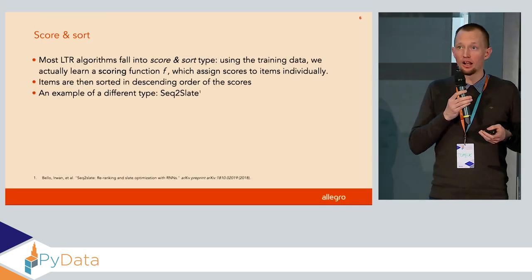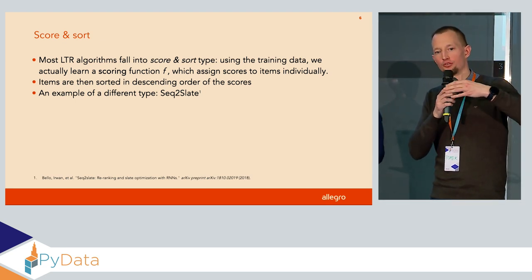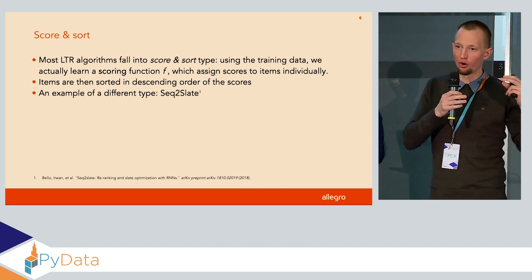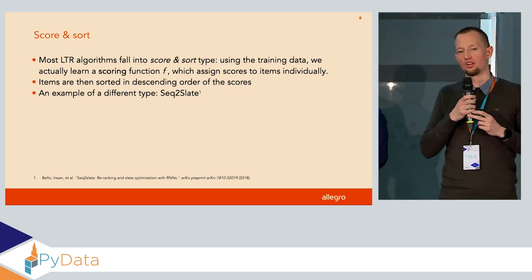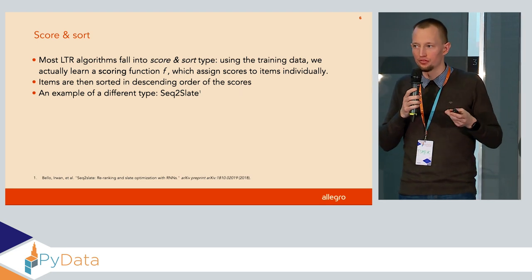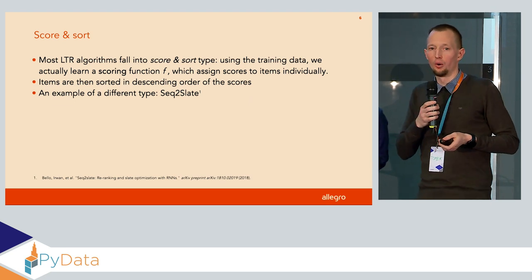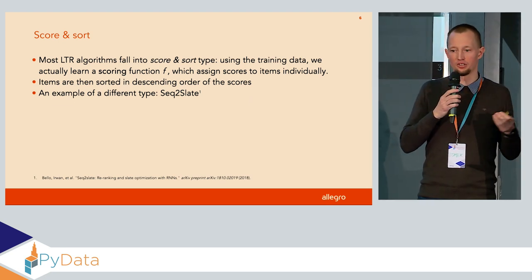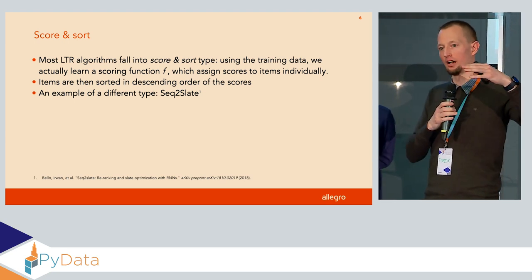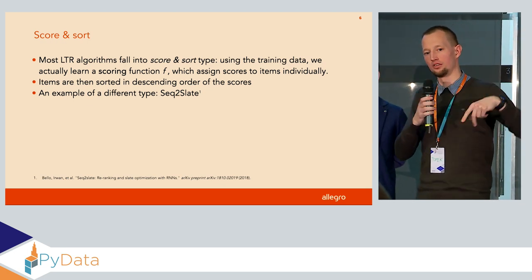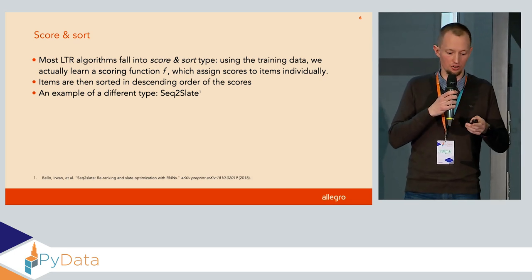Most ranking algorithms fall into the score-and-sort category: we don't learn a ranking function as a whole but instead learn a scoring function that assigns a numerical score to every item, then sort in descending order. If you can't think of how this could be done another way, one example is the seq2slate algorithm, which is an iterative process that at each stage points to one of the candidate items and says this will be on top, then picks the next one from the remaining set.